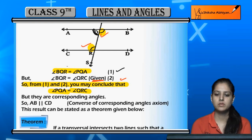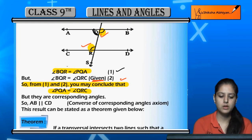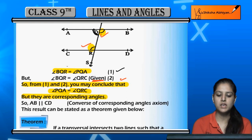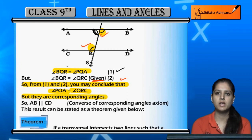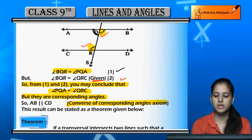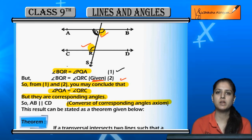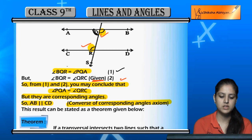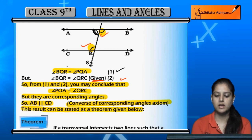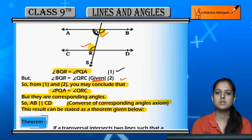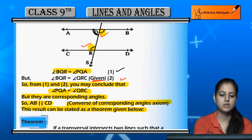Now, we know that these two angles are corresponding angles. Using the converse of corresponding angles axiom, we can say that if the two angles are corresponding, it means that the lines are parallel. So AB and CD are parallel. This result can be stated as a theorem given below.